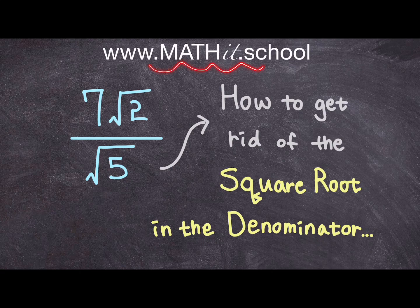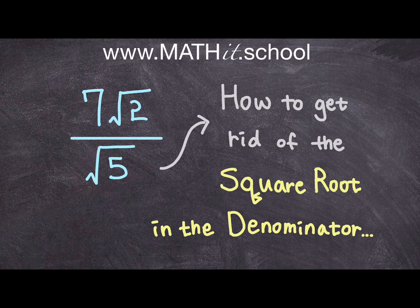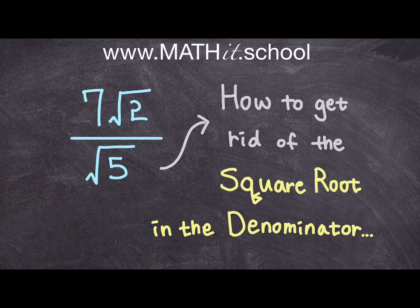Hi guys, this is Math at School again, and in today's video, I'm going to show you how to get rid of this square root expression from the denominator. Now you're never supposed to have a radical or a square root in the denominator of your fraction. I won't go into detail as to why, but you're not supposed to have it in the denominator, so you need to get rid of that radical.